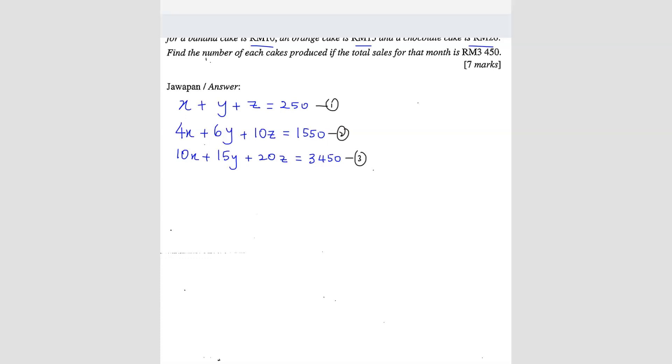I'm going to take the second equation minus the first equation times 4. So we get 4x plus 6y plus 10z equals 1550, then minus 4x plus 4y plus 4z equals 1000 (which is 4 times 250).